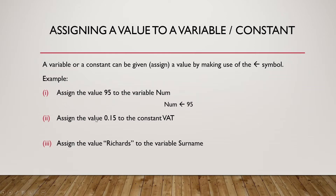The second part: assign the value 0.15 to the constant vat — so it is done as follows: vat, arrow symbol, 0.15. And lastly, we assign the value Richards to the variable Surname, done as follows: Surname, arrow symbol, Richard. As you can see, values which are numbers can be assigned directly to variables. However, anything of a textual or character nature should be written between double quotes.